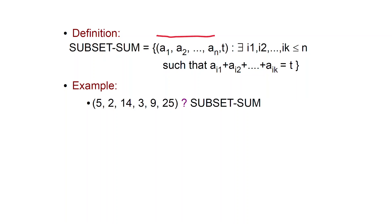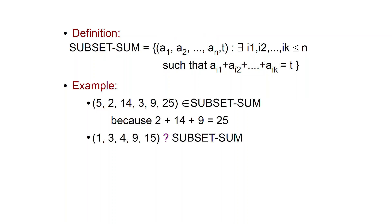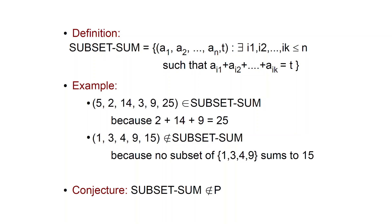We are just asking if there is a subset of the a_i's which sums to t. For example, consider this tuple here: is it in Subset Sum? Can you find a subset of these numbers which sums to 25? The answer is yes, because 2 plus 14 plus 9 equals 25. Let's consider another example: can you find a subset of these numbers which sums to 15? The answer is no.